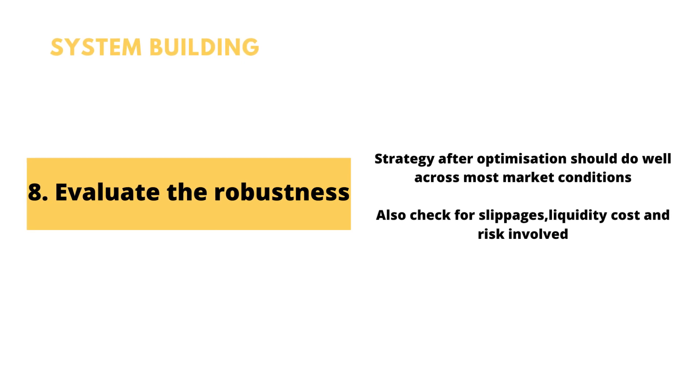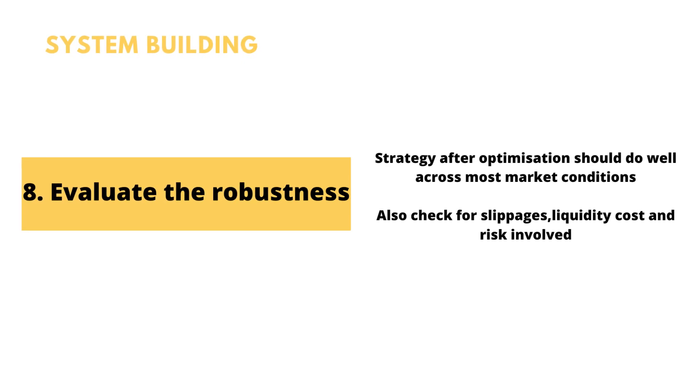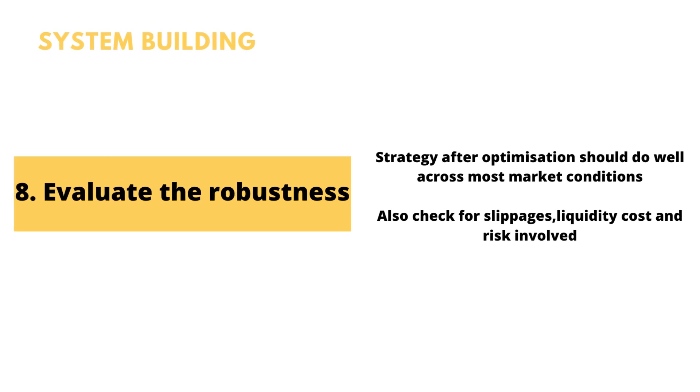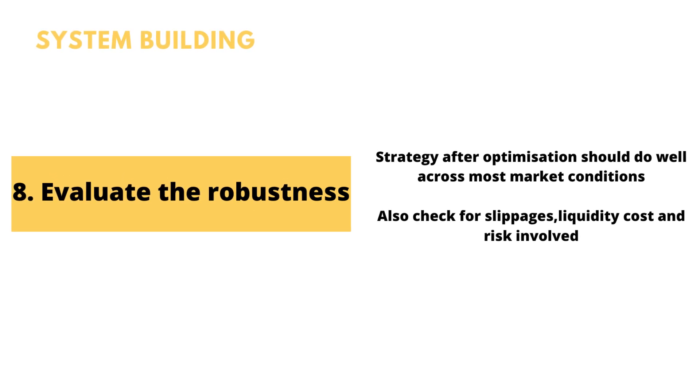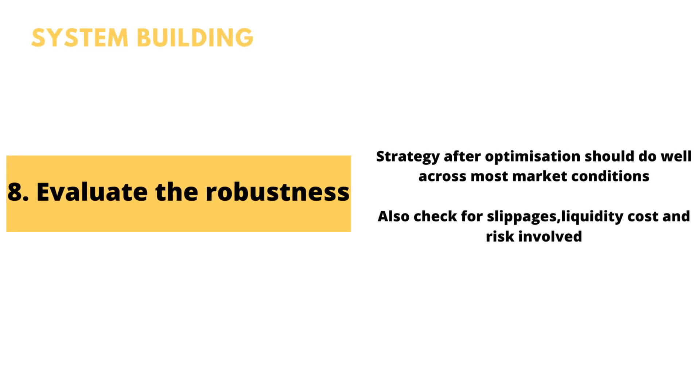The eighth step is evaluating the robustness of your system. You need to check for slippages, the risk involved, and liquidity cost if you're trading the strategy. You need to make sure that your strategy is making money in most market conditions. Robustness means checking whether your strategy is scalable or not.